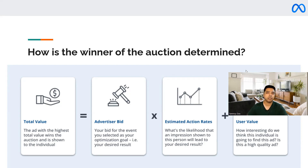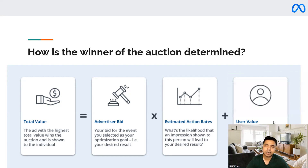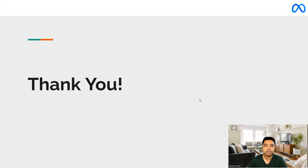These three factors put together produce a total value. Once the total value is calculated, it is compared with other advertisers' ads in the auction, and then the winning ad is selected, which appears on the Facebook page. This is how the winners are selected in the auction system and how Facebook runs its ad auction. I hope this makes sense and you now understand how the Facebook ad auction works. Thank you so much for listening to this session.